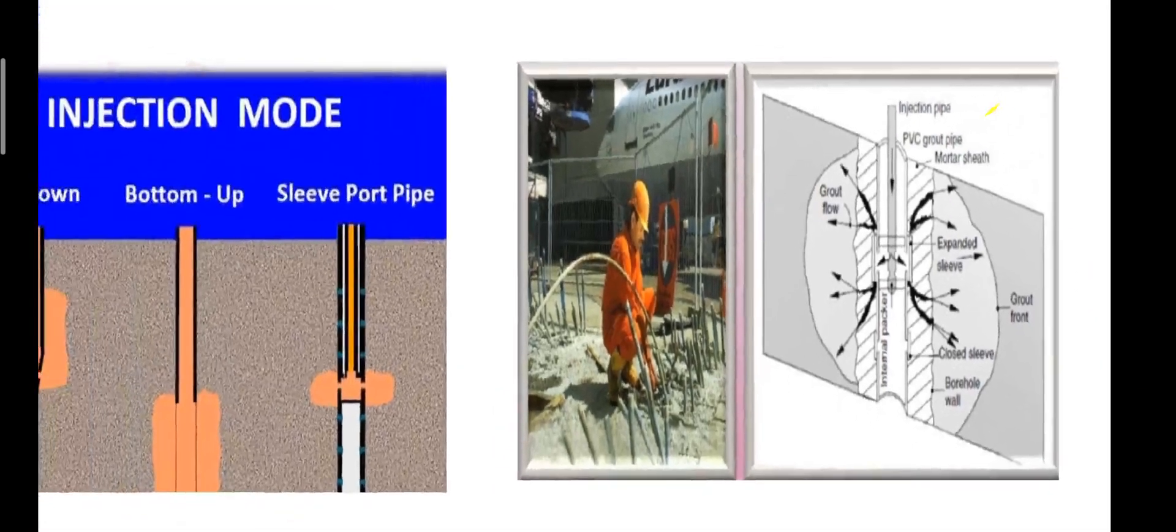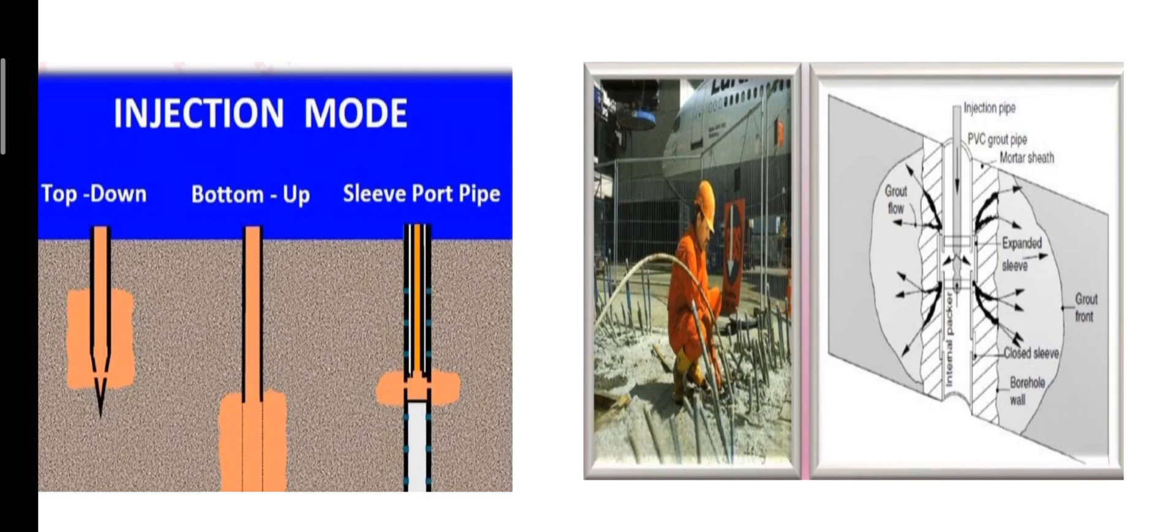The rig drills a hole in the soil, fills it with weak or brittle Portland cement grout, and inserts the sleeve port pipe.